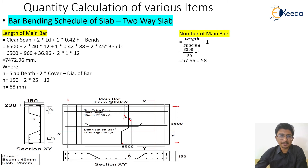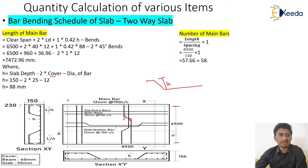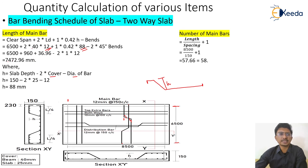Now, h is the center-to-center distance between the top and bottom of the slab. To calculate h: from the total slab depth, subtract twice the cover and one bar diameter. That value comes to 88 mm. The development length is 40d, where d = 12 mm. With two development lengths — one on each side — putting all values together, the length of the main bar comes to 473 mm, that is 0.473 m.